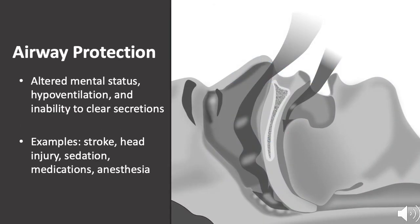Patients often need to be intubated and mechanically ventilated for airway protection. Patients with altered mental status may have associated hypoventilation and inability to clear secretions. Further, obtunded patients in the supine position have muscle relaxation of the tongue and soft tissues of the posterior oropharynx, which fall backwards, obstructing airflow.